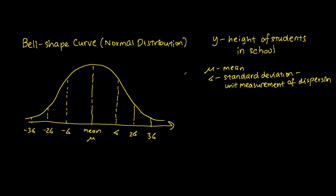Supposedly the mean height of students in school is 1.6 meters and the standard deviation, or the unit measurement of dispersion, is 0.1 meters. If we look at this bell-shaped curve, the mean, like what I've mentioned, is 1.6 meters.